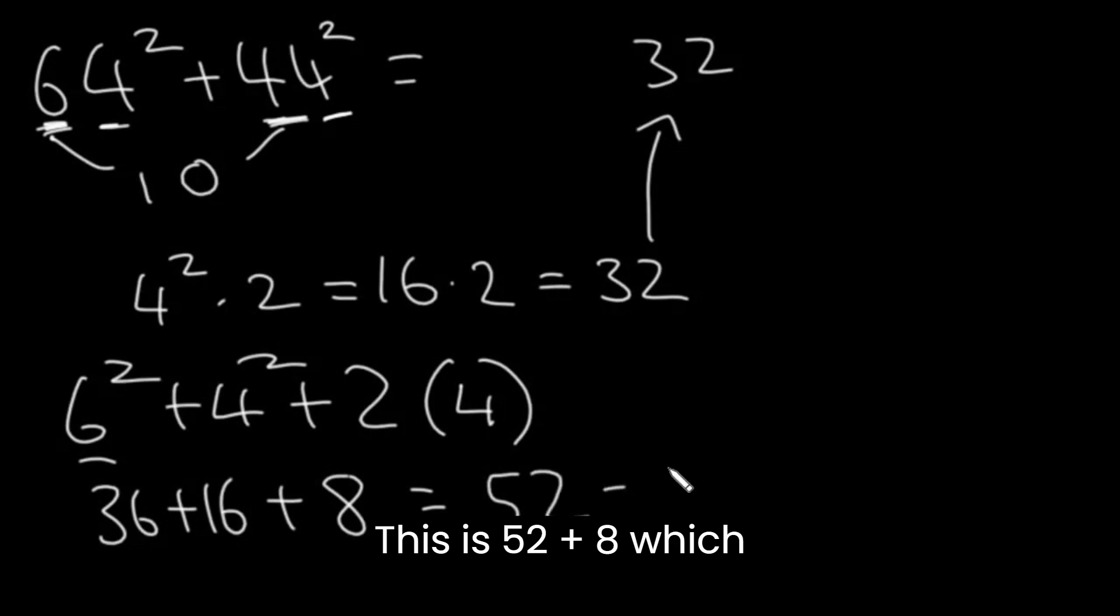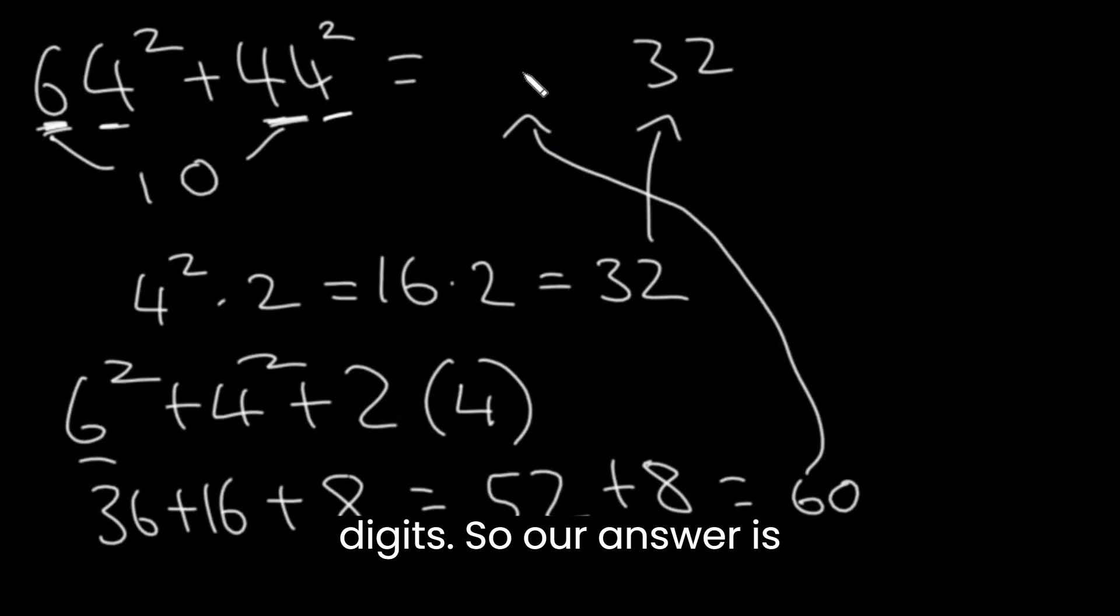This is 52 plus 8, which is 60. And this will be the first two digits. So our answer is 6032.